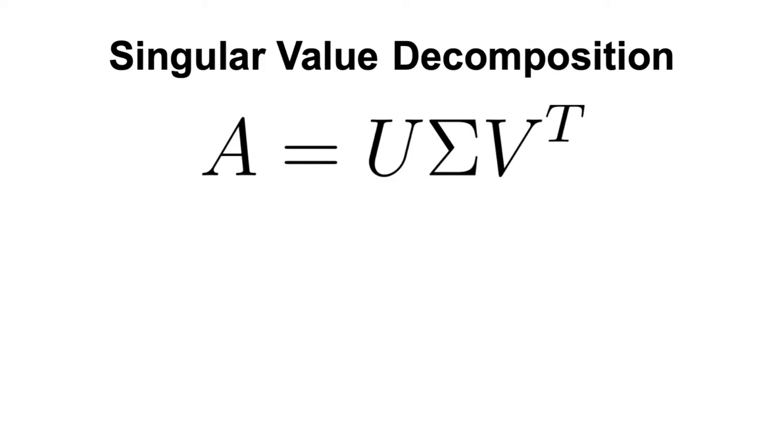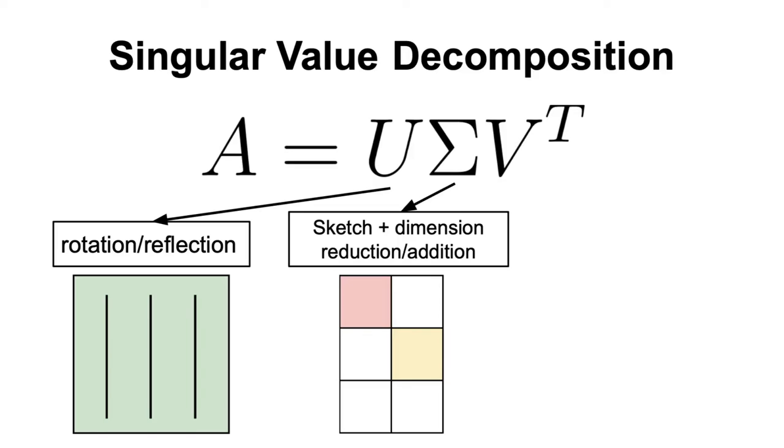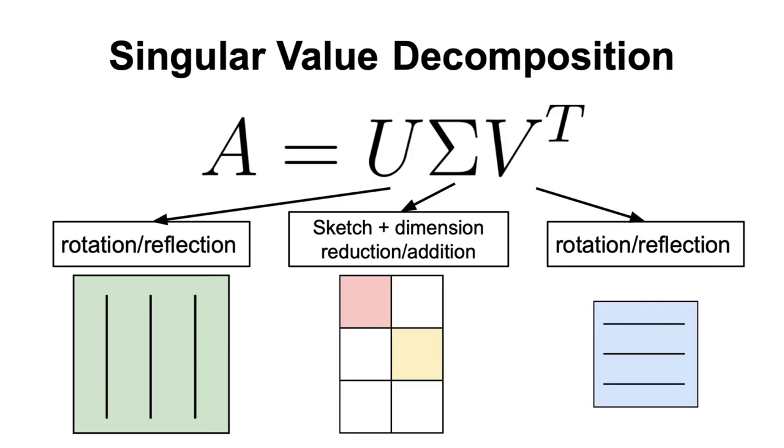So, to summarize, the singular value decomposition can factorize any matrix into a product of three matrices. One, we have the matrix U, which is a rotation matrix. Two, we have the matrix Sigma that stretches the vector space and then adds or eliminates dimensions. And three, we have the matrix V, which is another rotation matrix. And that's basically what the singular value decomposition does.